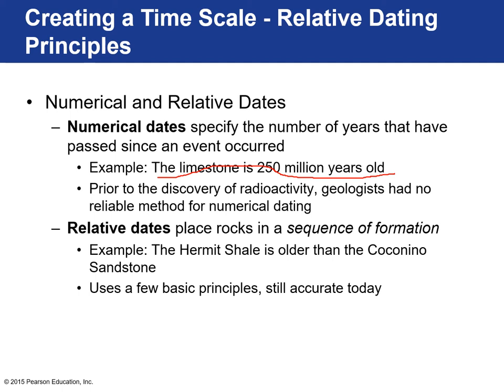It was really the discovery of radioactivity which allowed scientists to reliably date events in the geologic past. Prior to that, geologists used relative dates — essentially just putting events or rocks in order of sequence of formation. The example here is: the Hermit Shale is older than the Coconino Sandstone, meaning the Hermit Shale was deposited first and the Coconino Sandstone was deposited on top. These principles developed over 400 years ago are still accurate today.